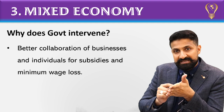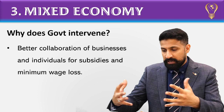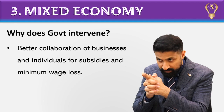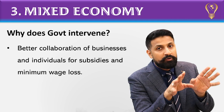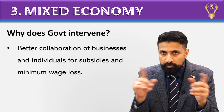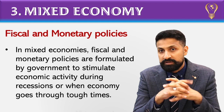So to control this, the government intervenes. The next objective is better collaboration of businesses and individuals for subsidies and minimum wage. The government tries to ensure that businesses and individuals have good collaboration so that where subsidies need to be given, both government and people benefit. Where wage losses need to be controlled, the situation remains under control. So to summarize: government intervenes to prevent market exploitation on both sides, but there are other objectives too.